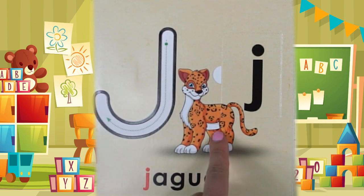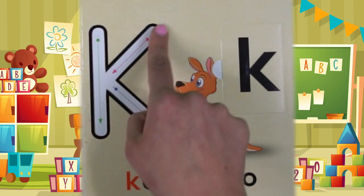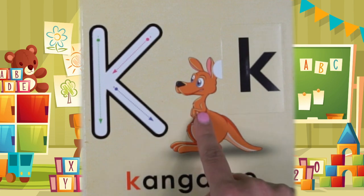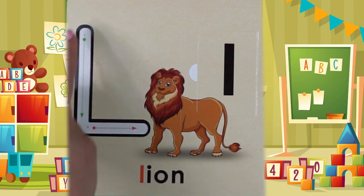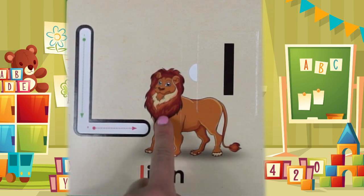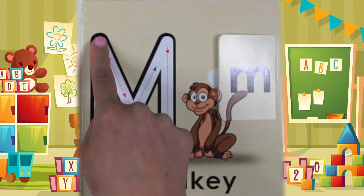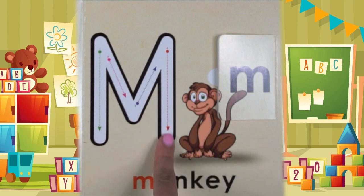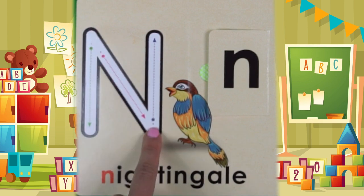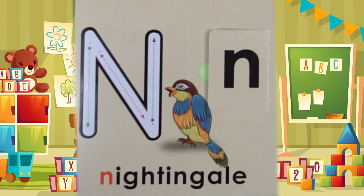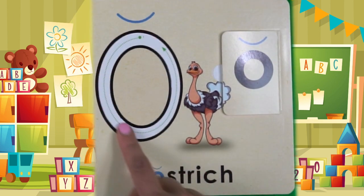Its name is J, its sound is J. Jaguar starts with J and jellybean starts with J. Its name is K, its sound is K. Kangaroo starts with K and key starts with K. Its name is L, its sound is L. Lion starts with L and leaf starts with L. Its name is M, its sound is M. Monkey starts with M and mirror starts with M.